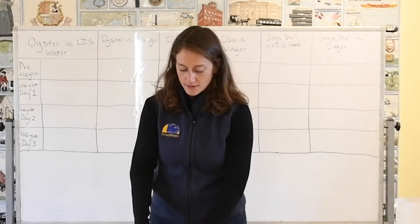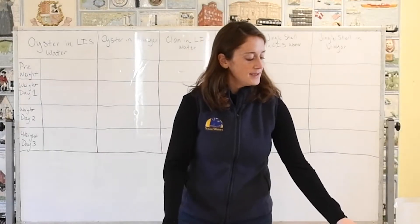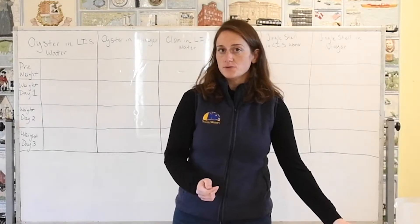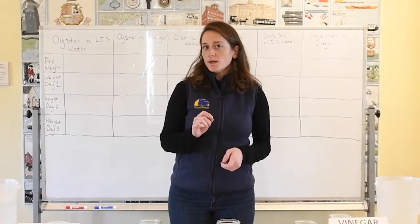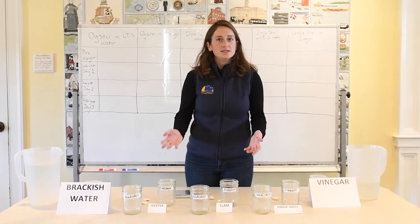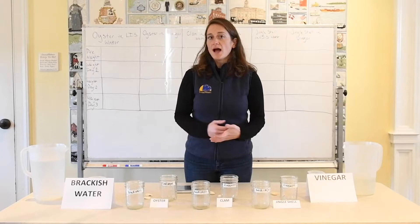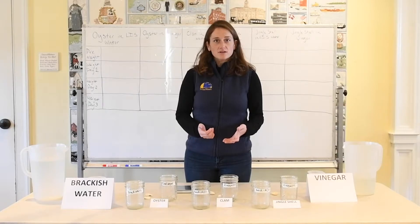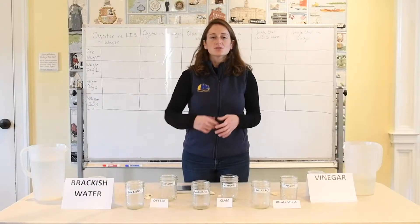I also have a scale to measure each of my shells before and during the experiment, and a beaker that measures at least 200 milliliters to pour out my solutions. Now that I have all of my materials, I'm ready to get started. But before we do that, I'd like you to make a hypothesis. Think about what you think will happen to each of the shells when we put it into the brackish water or vinegar. After you've written that down, we're ready to start weighing our shells, and I'll put each shell right into its mason jar after weighing so I don't mix any of them up.